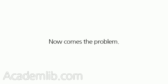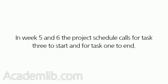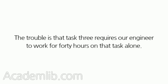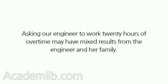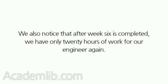Now comes the problem. In Weeks 5 and 6 the project schedule calls for Task 3 to start and for Task 1 to end. The trouble is that Task 3 requires our engineer to work for 40 hours on that task alone. If we try to complete the work on Task 2 and start working on Task 3, we will require 60 hours per week of the engineer's time. Asking our engineer to work 20 hours of overtime may have mixed results. We also notice that after Week 6 is completed, we have only 20 hours of work for our engineer again.